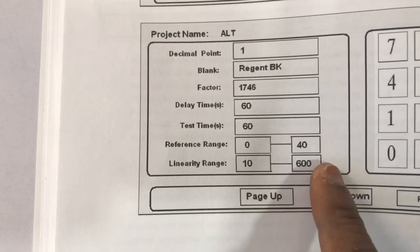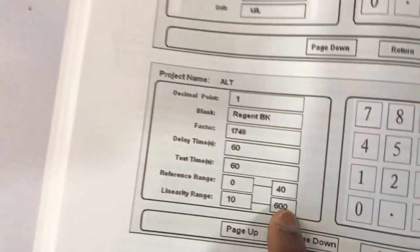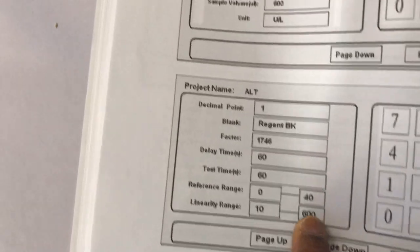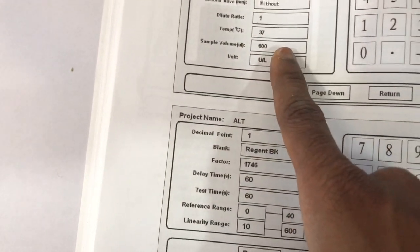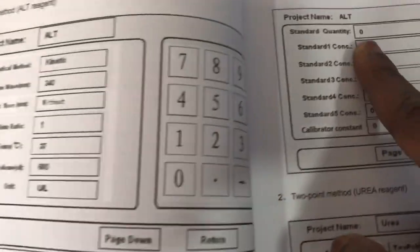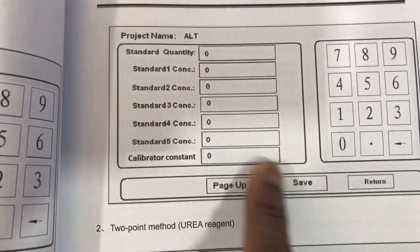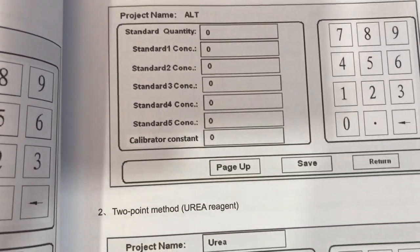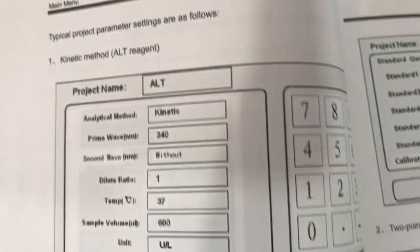Then enter the reference range. For a typical kinetic method, because the manufacturer provides the factor, you don't need to run a standard — the standard quantity will be zero. That's how to program for a kinetic method.